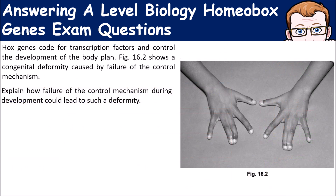Let's look at a question. HOX genes code for transcription factors that control the development of the body plan — the order in which things develop. Figure 16.2 shows a congenital deformity caused by failure of this control mechanism. The question asks: explain how the failure of this control mechanism leads to this deformity. We can see fused fingers with webbing in between, so we're talking about something that stops apoptosis from happening, which would normally break down the cells and cause the fingers to separate.